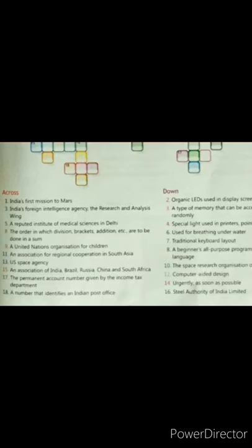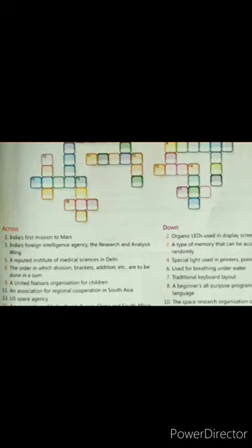Clue number 15, an association of India, Brazil, Russia, China and South Africa. The answer for this one should be BRICS. They are called as BRICS countries. So 15, here it is. Fill it from left to right, B-R-I-C-S. So that will be the answer. Now you are getting it, how to fill the crossword puzzles.